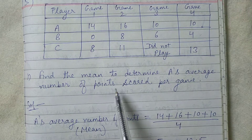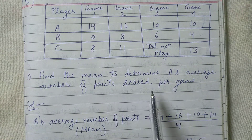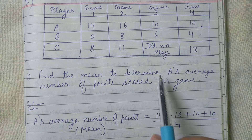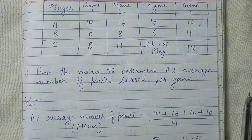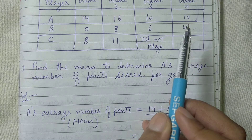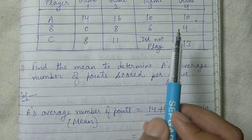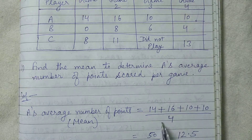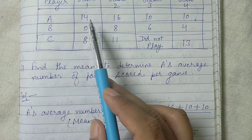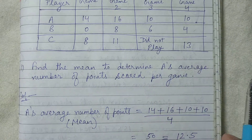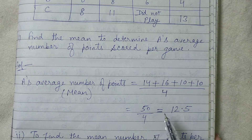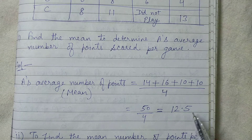First question: find the mean to determine A's average number of points scored per game. A's points are fourteen, sixteen, ten, and ten. Formula: sum of observations divided by number of observations. Fourteen plus sixteen plus ten plus ten, divided by four. The sum is fifty. Fifty divided by four equals twelve point five. So twelve point five is the mean of A's points.